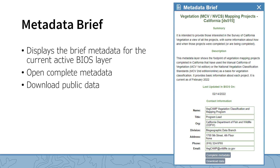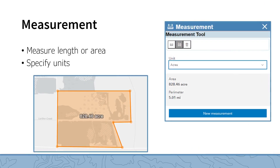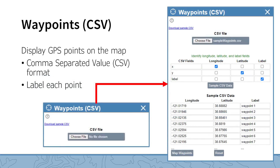As mentioned in the last session, you can access the complete metadata or download publicly available data from within this tool. You can measure linear distances or areas using the Measurement tool. The measurement units can be changed using the Unit drop-down menu. Your measurement will be returned in the right-hand panel. Press the New Measurement button to begin a new measurement. To dismiss a result and return the tool to its default settings, press the Clear Measurements button.